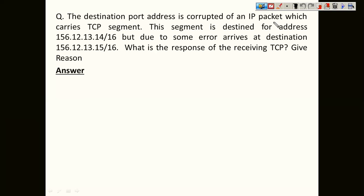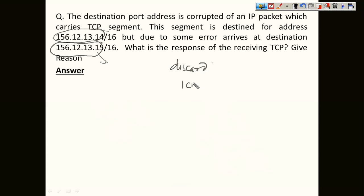Next question: the destination port address of a TCP segment is corrupted. The segment was destined for one address but arrives at another due to corruption. When TCP receives this packet, it applies the checksum. Because the values changed, the checksum will fail, the packet will be identified as corrupted and discarded, and an ICMP message will be generated and sent back to the sender.